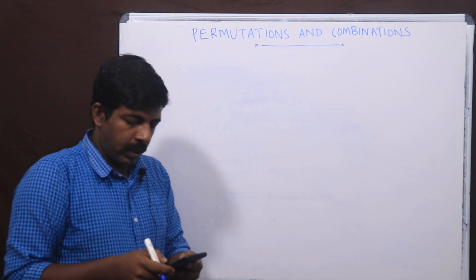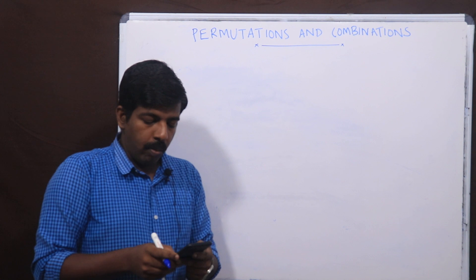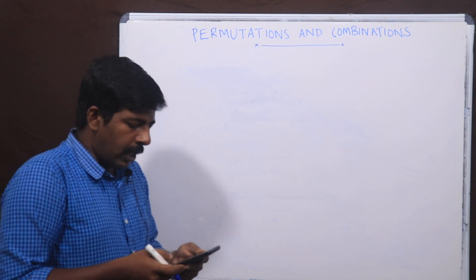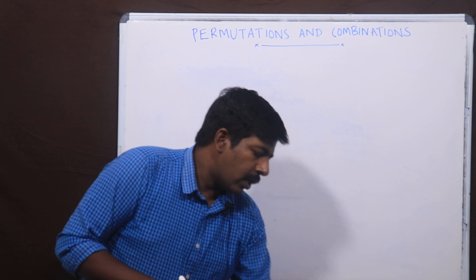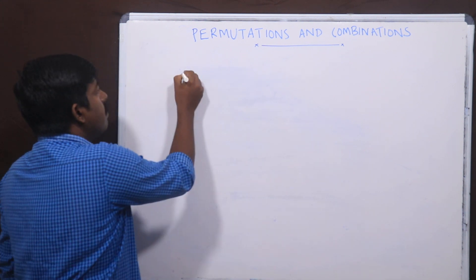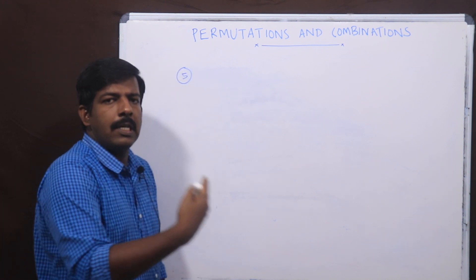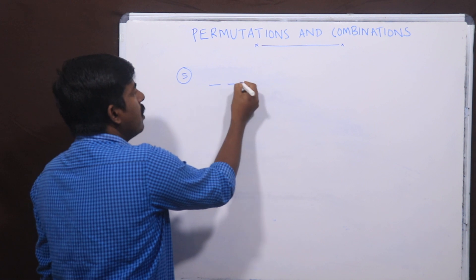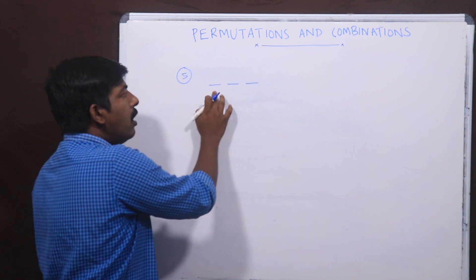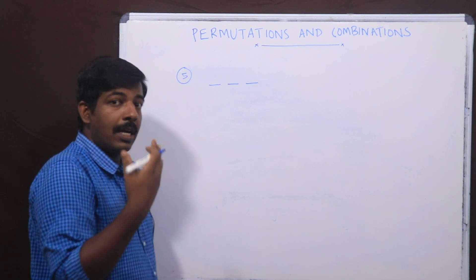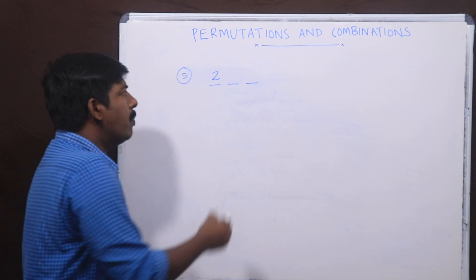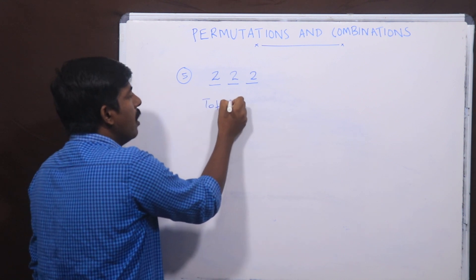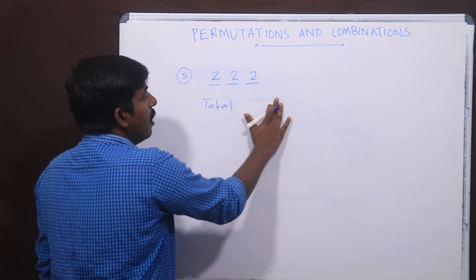Question 5: A coin is tossed 3 times and the outcomes are recorded. How many possible outcomes are there? We have 3 coins tossed — coin 1, coin 2, coin 3. Each toss can result in heads (H) or tails. We apply the fundamental principle of counting to find the total number of possible outcomes.